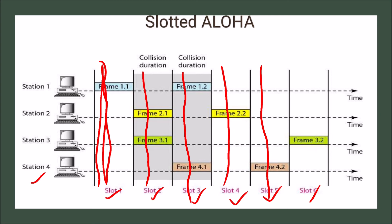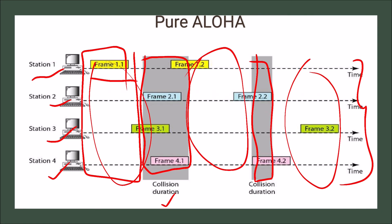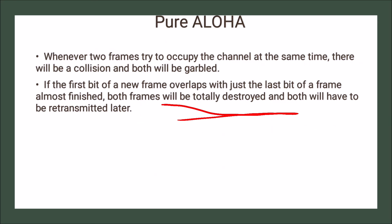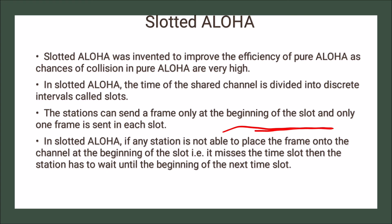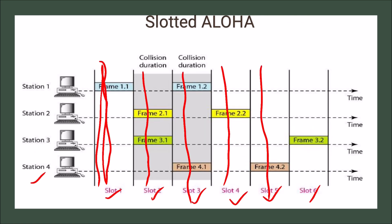In pure aloha, more than two frames can collide because every station can send at any time — frames 1.2, 2.1, 3.1, and 4.1 are all destroyed and have to be sent again. In slotted aloha, frames are only sent at the beginning of a slot and only one frame is sent per slot. It may happen that in some slots more than one frame is ready to send, which still causes collision, but collisions are more limited.